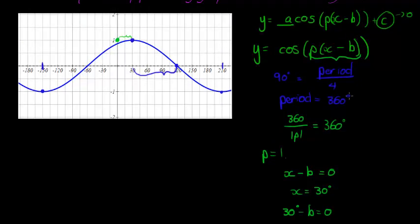And putting all of this together, I find my final answer as y is equal to, a is 1, cos, p is equal to 1x minus 30, I mean x minus 30.